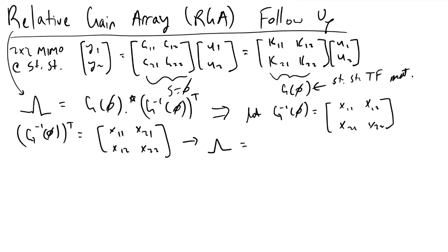It'll be equivalent to k11, k12, k21, k22, times—I need to include this special notation because we are doing an element-by-element multiplication—so x11, x12, x21, x22.